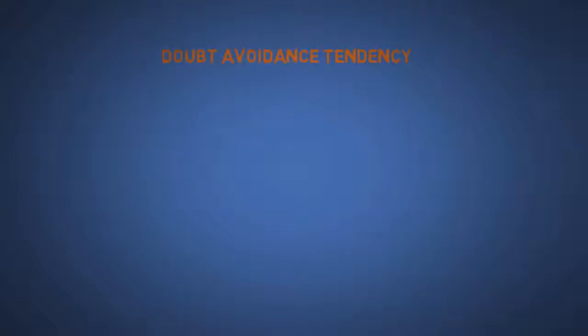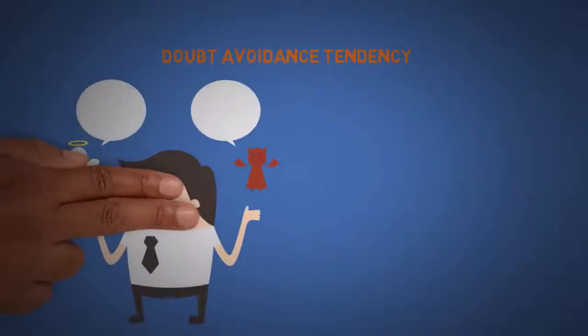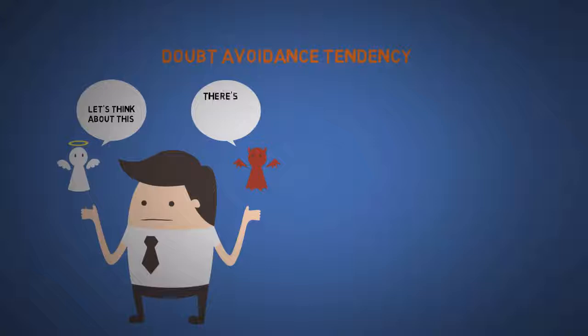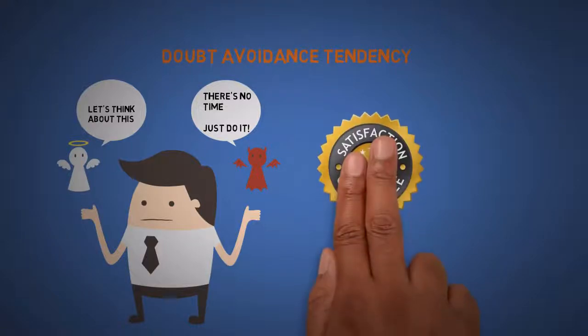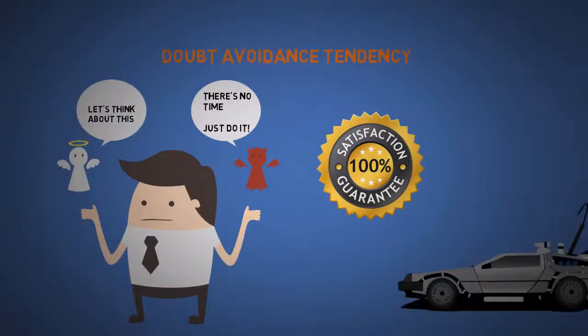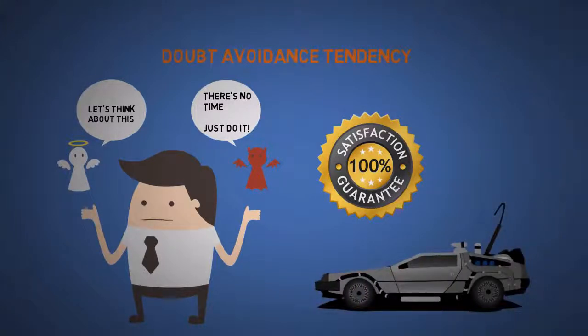The fourth is doubt avoidance tendency. If we are unsure about a decision, we try to quickly remove any doubt by making an ill-informed, quick decision. So if you want to become more persuasive, then simply increase your certainty. Like if you don't enjoy the rest of this video, then I promise you a free time machine so I can refund your time. No questions asked.